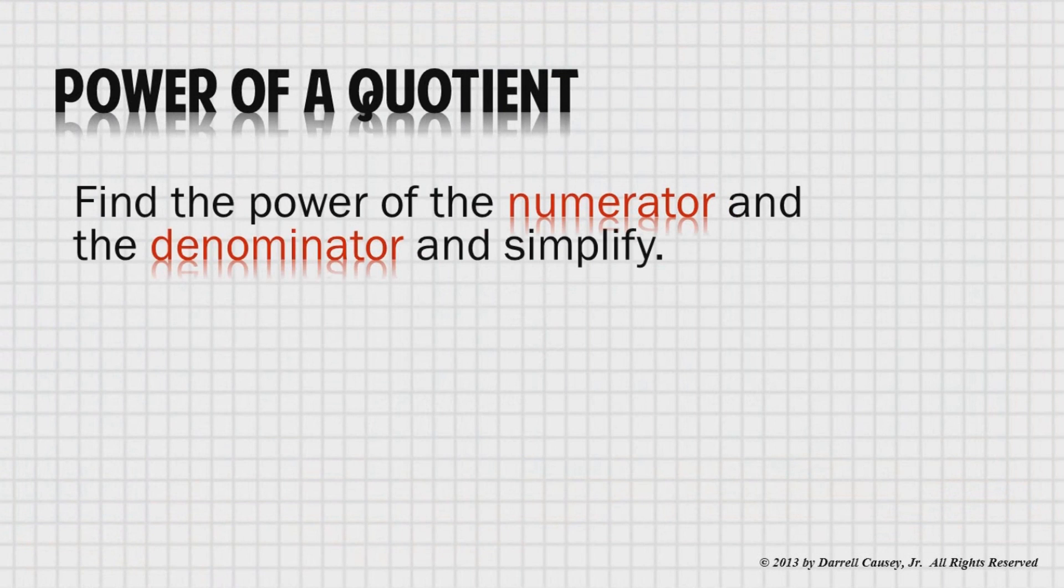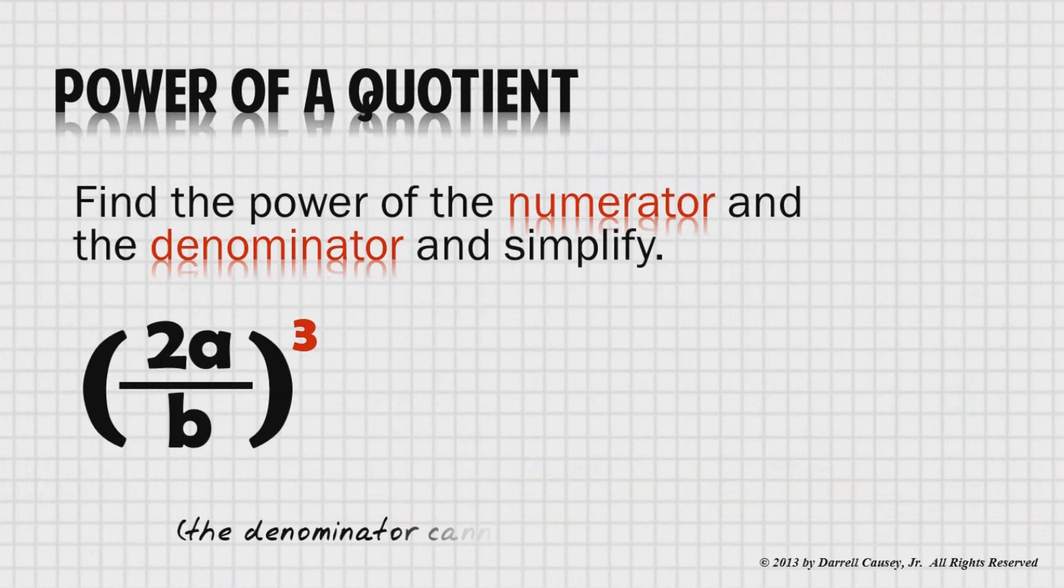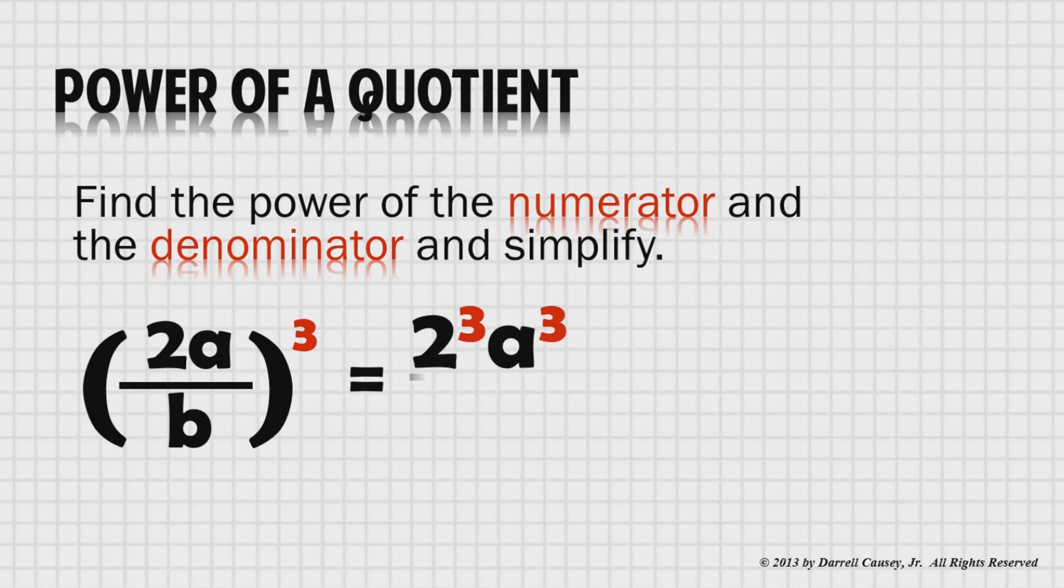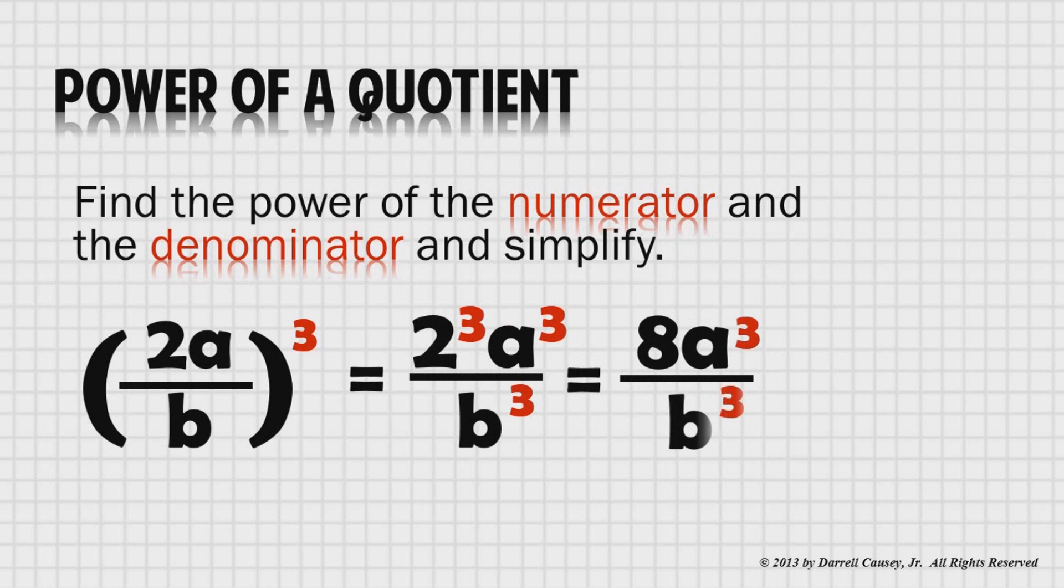Power of a quotient. Find the power of the numerator and the denominator and simplify. 2a, quantity 2a over b cubed. In this case, now we need to remember that the denominator cannot be zero. And so, 2 to the third power, a to the third power, and b to the third power. The power applies to everything inside the parentheses. And there we go, simplified, ready to go.